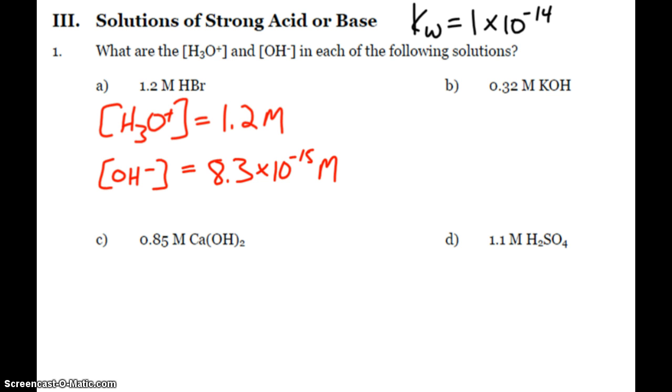So when I take 1 times 10 to the negative 14 and divide by my known, my 1.2, my hydroxide is 8.3 times 10 to the negative 15. Not very much there at all. But indeed, we see that we have some there present because of the self-ionization of water. Bases are the same thing. If I have a strong base, then the molarity of that solution is the molarity of that base. But be careful of when we have two hydroxides or two hydrogens in the formula.